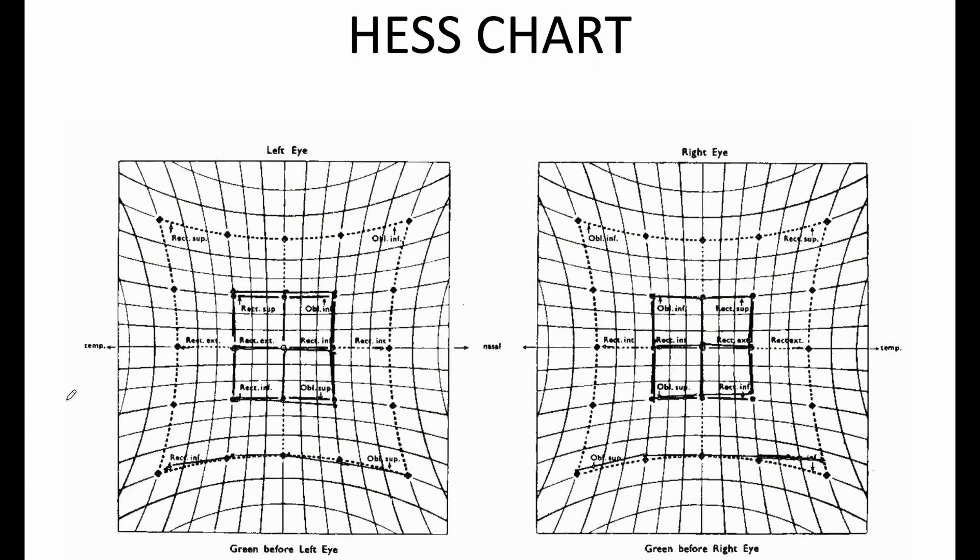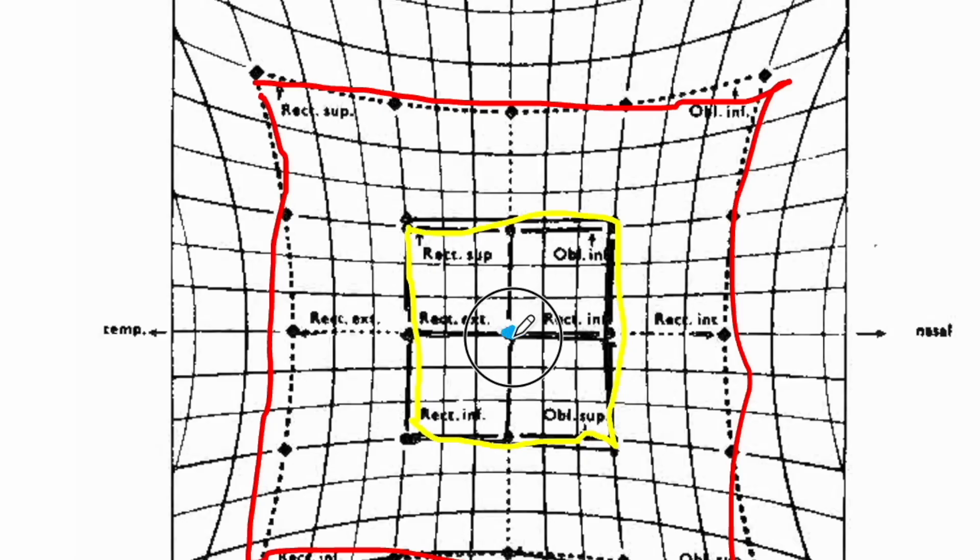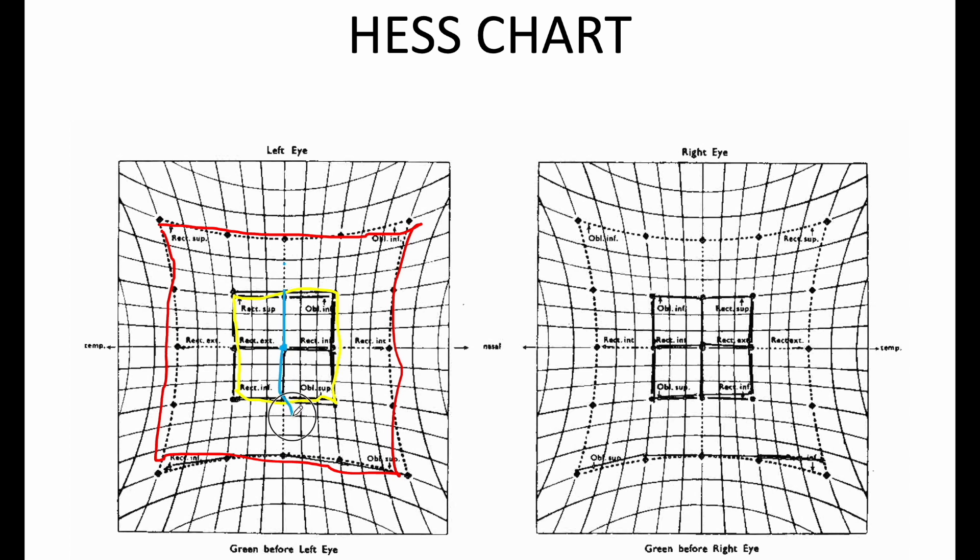This is what a blank Hess chart recording sheet looks like with the left eye and the right eye clearly marked at the top. It has an inner square and an outer square. If the person has no motility defect, the chart will follow the outline of both the inner and the outer square. You have to remember that there is a center of the squares, and if there is any extraocular muscle imbalance, it will appear as a deviation from the standard outline. It could present like this with a center at a different point.